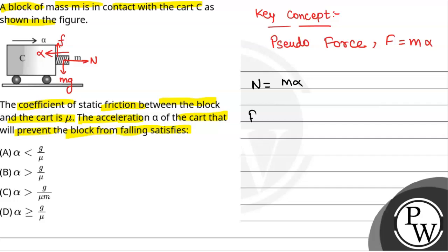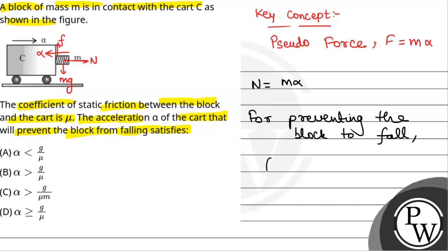For the block not to fall — for preventing the block from falling — we should have the frictional force must be greater than or equal to mg. Frictional force is equal to mu into N, and normal reaction is m into alpha. So, mu into m into alpha must be greater than or equal to mg.